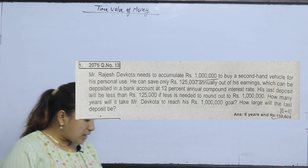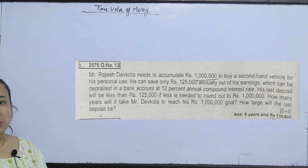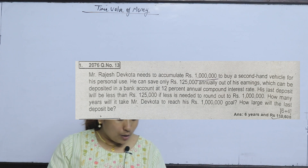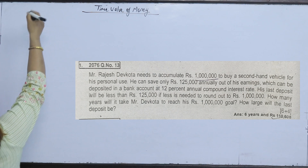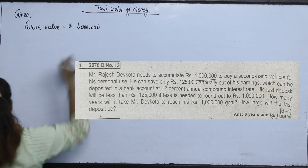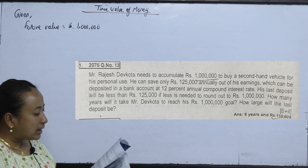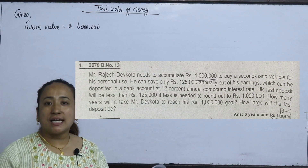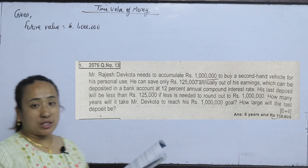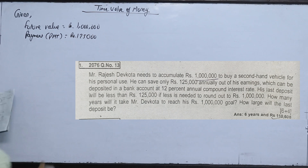The first question is: Mr. Rajesh Devkota needs to accumulate — accumulate means the future value — to buy a second-hand vehicle for his personal use. He can save only Rs 1,25,000 annually. This is a payment for each year.